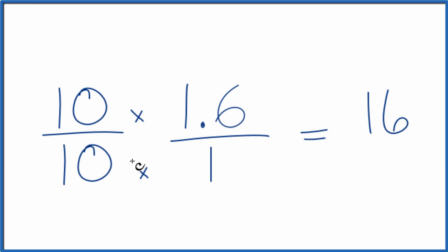That's because 10 over 10 is equal to 1. We're multiplying by 1—doesn't change the value, just the way we write it. 10 times 1 is 10, and now we have an improper fraction, 16 over 10.